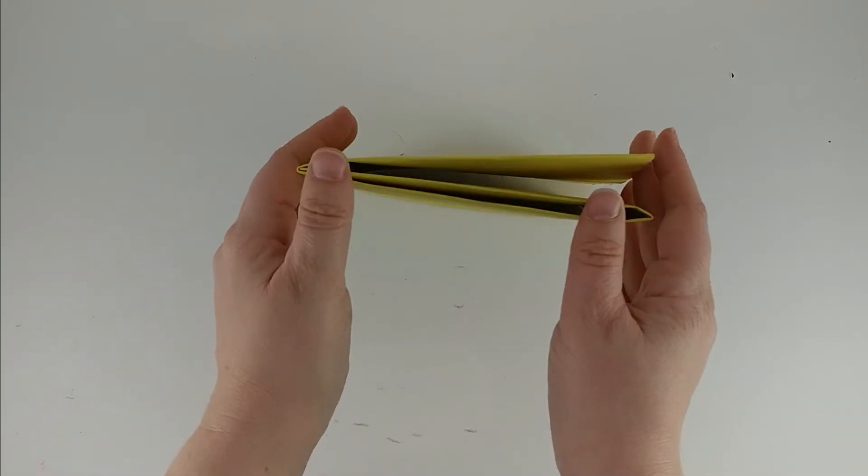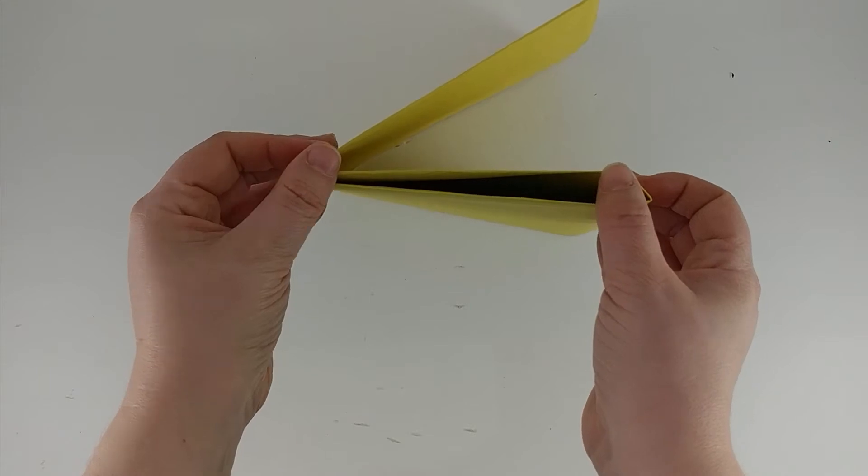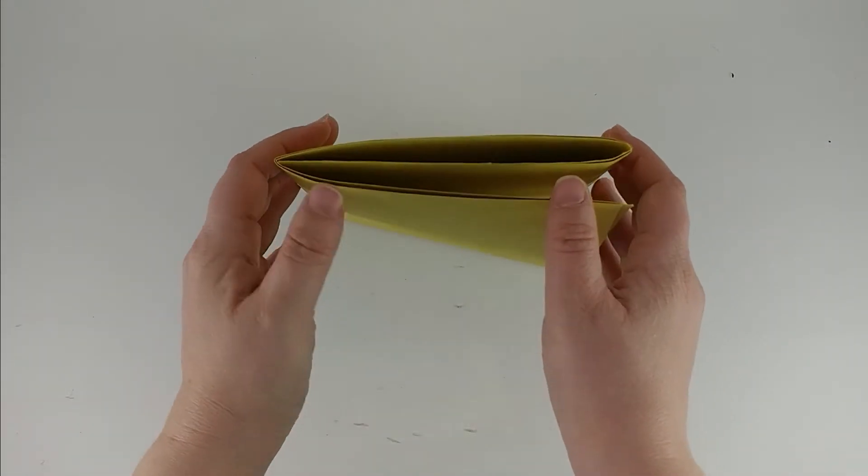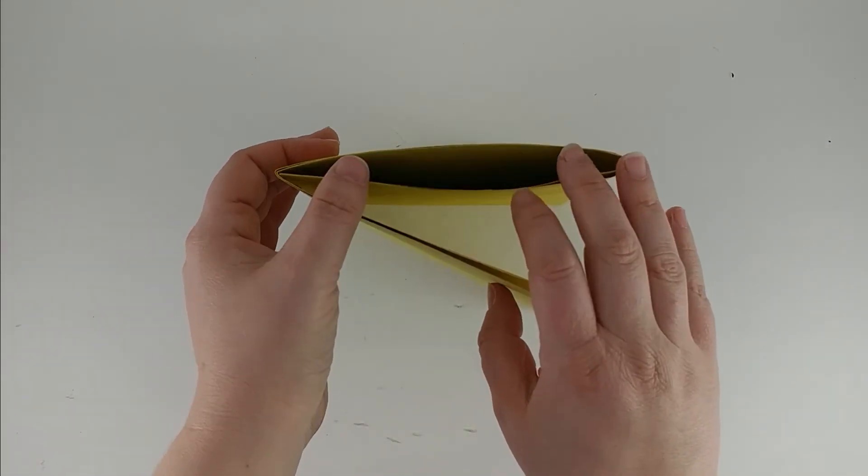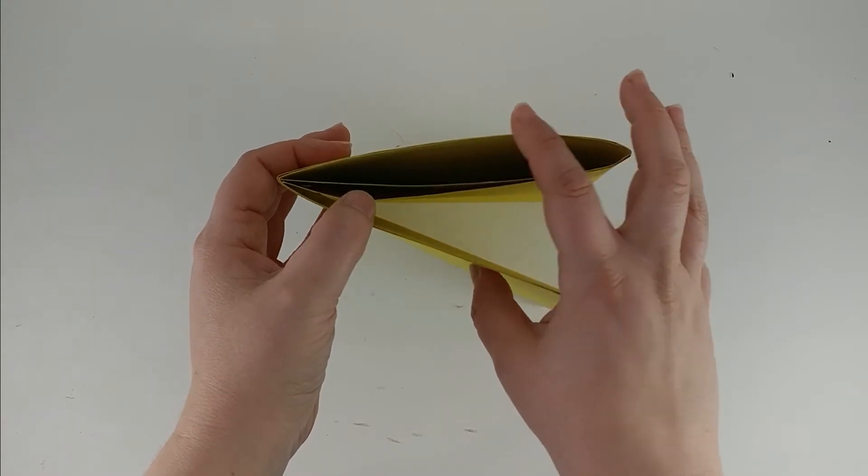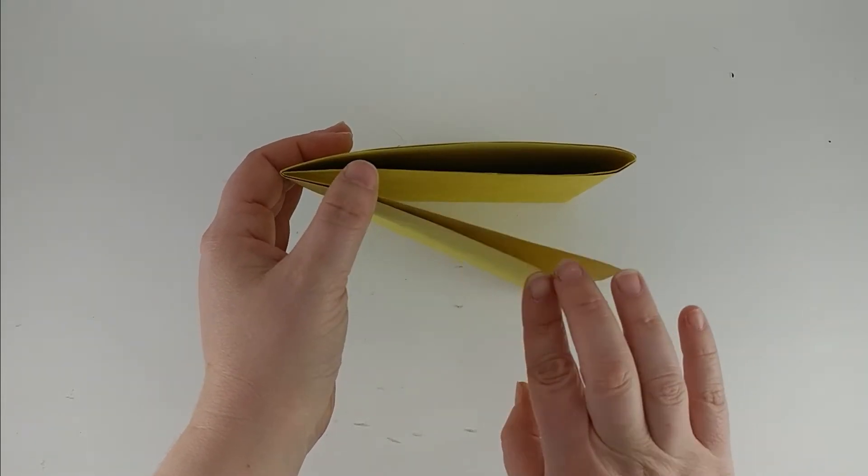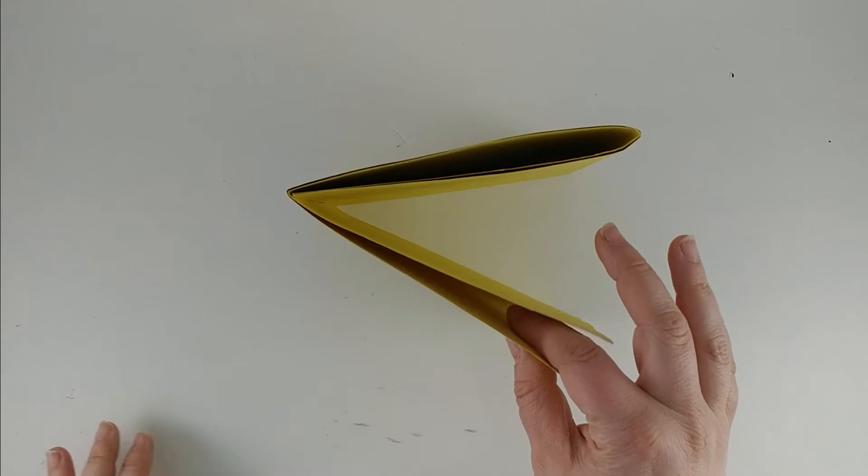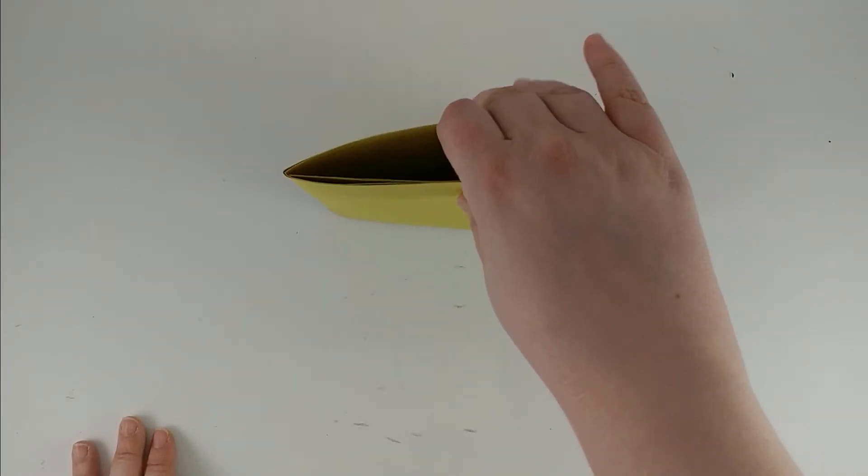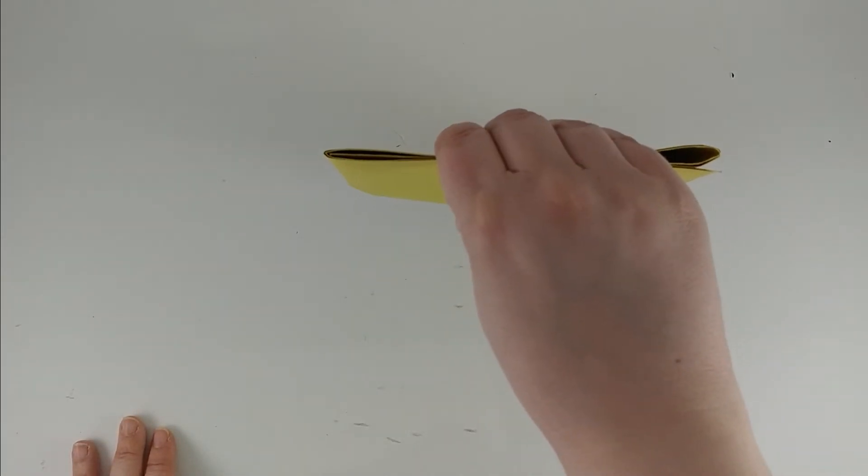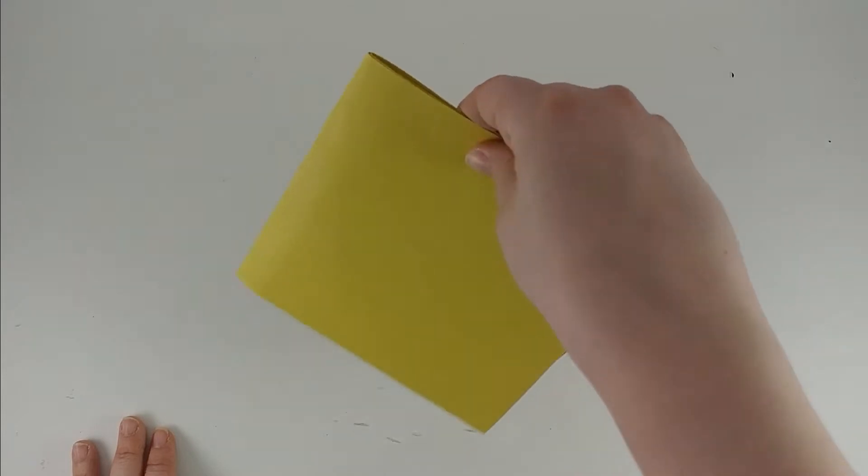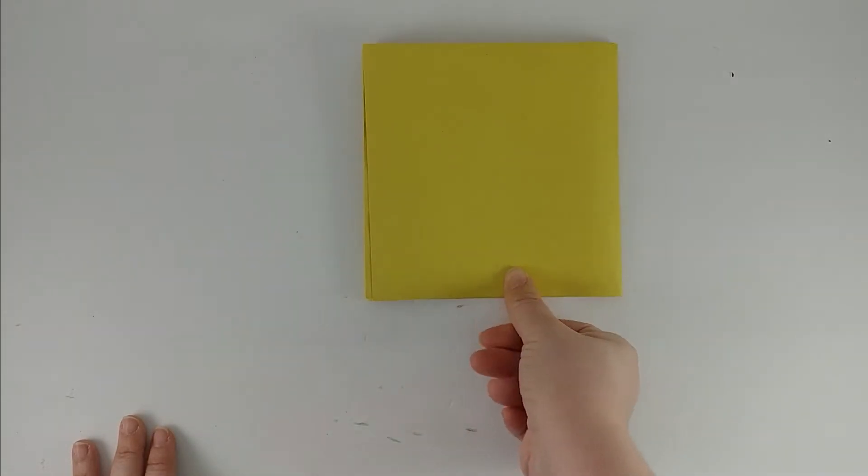There's an important way you want to hold this. This side has the fold in the paper. This side does not, so all of these little pieces are separate. You want the side that is not your folded side on the bottom. I'm holding the unfolded side and now I've got that side on the bottom.